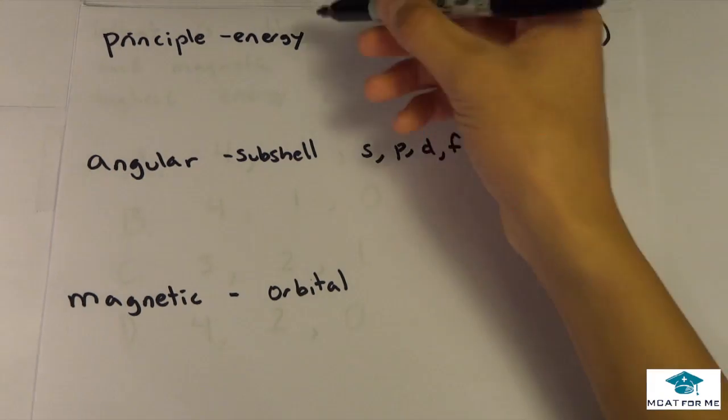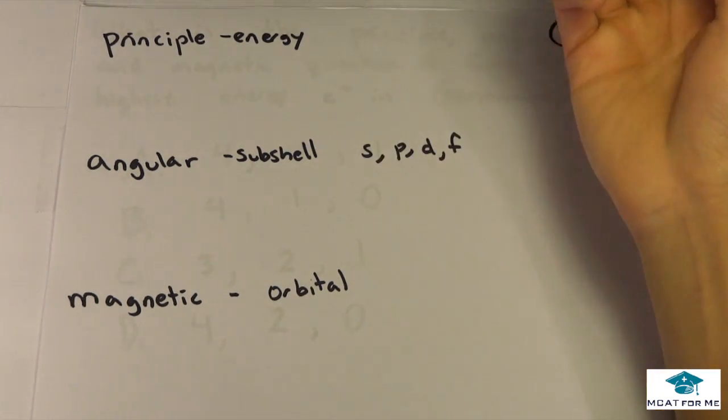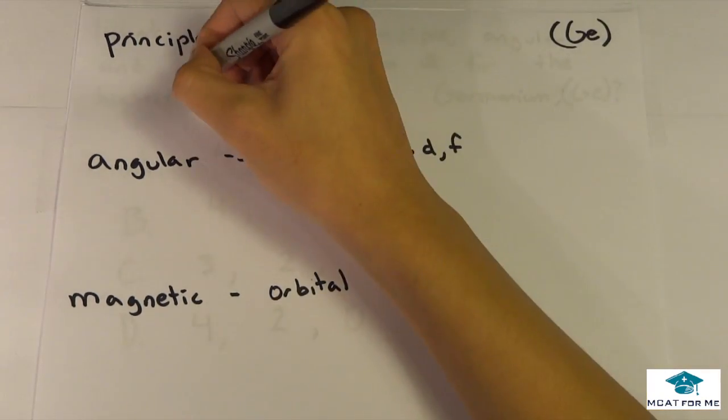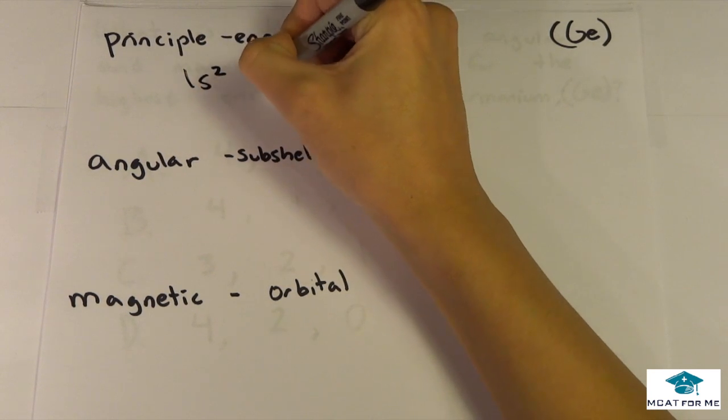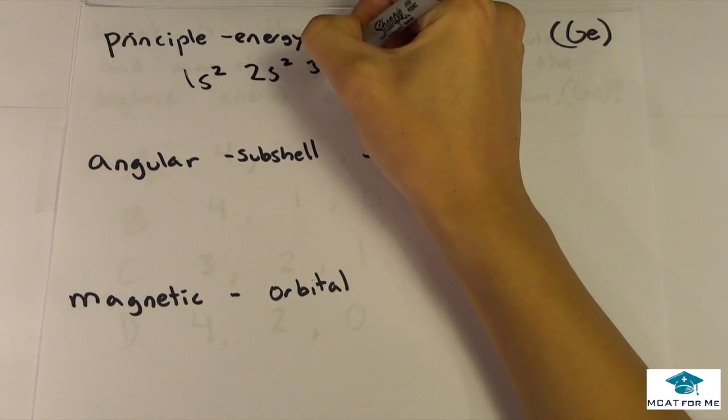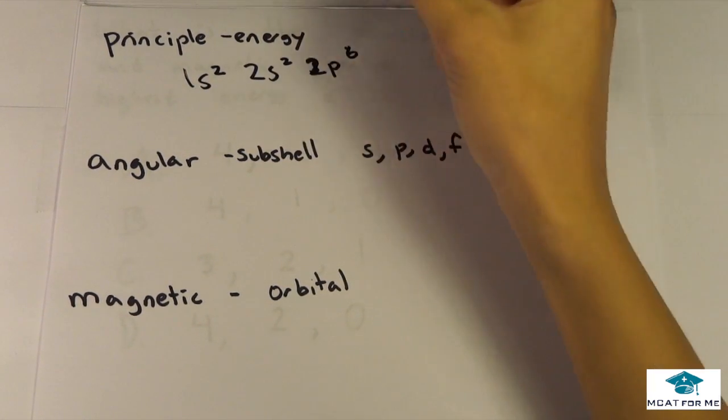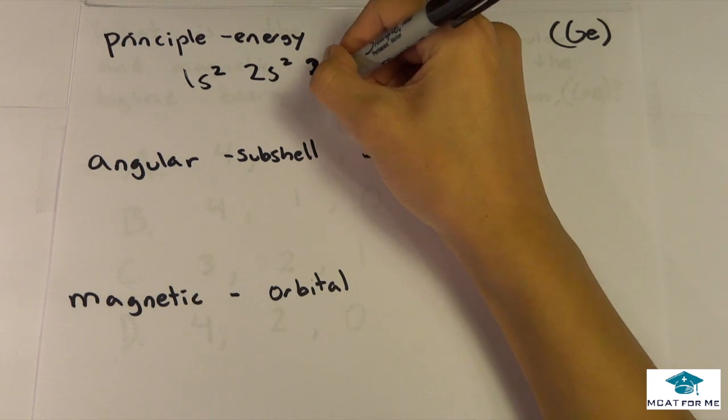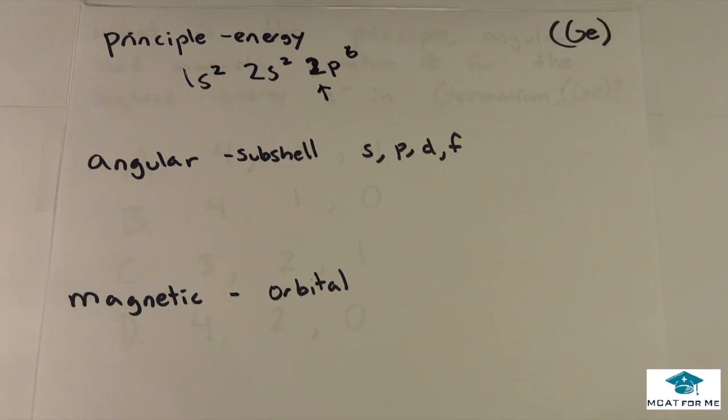So principal quantum number just defines the major energy level. So if we have this electron configuration, the principal quantum number of the last electron would be that number 2. So that kind of gives us a basic idea of what that is.